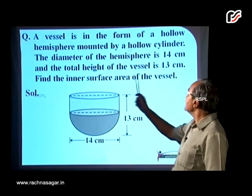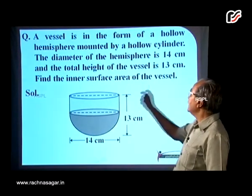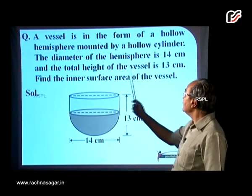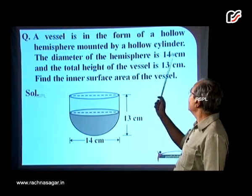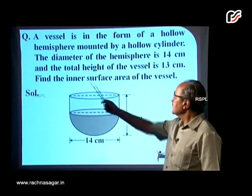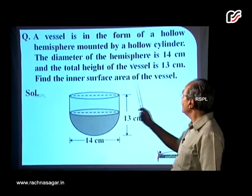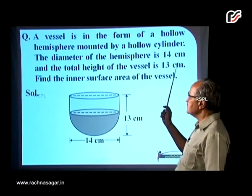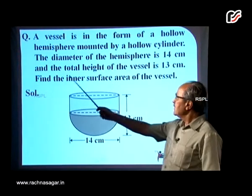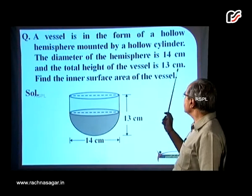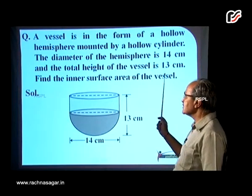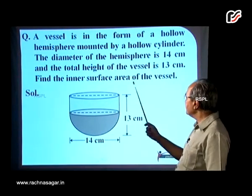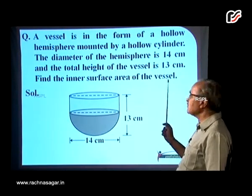A vessel is in the form of a hollow hemisphere mounted by a hollow cylinder. The diameter of the hemisphere is 14 centimeters and the total height of the vessel is 13 centimeters. Find the inner surface area of the vessel.